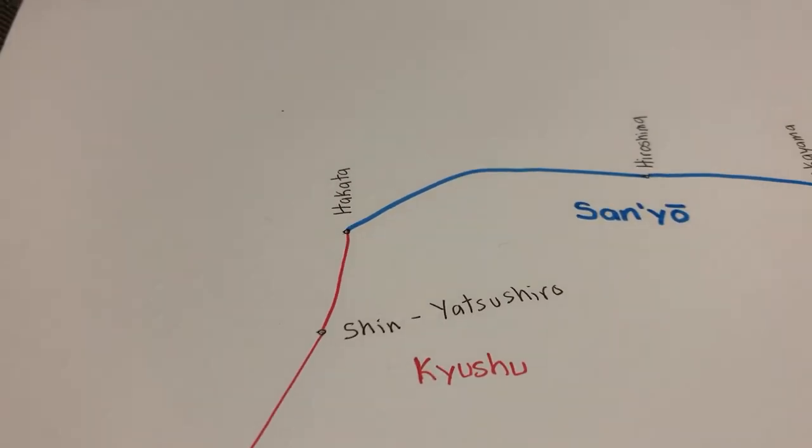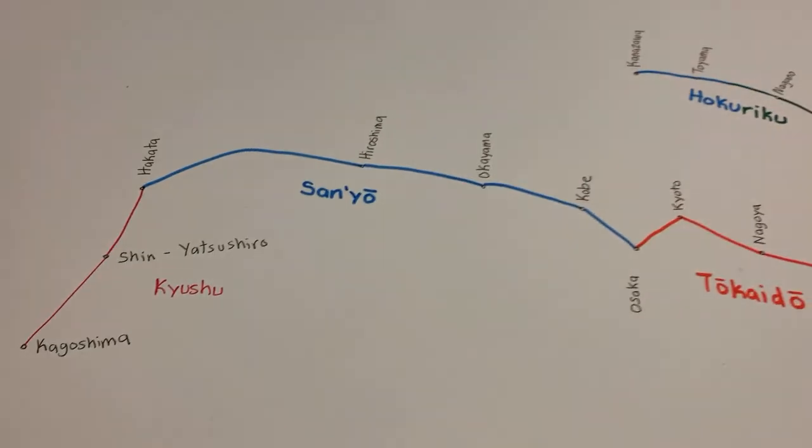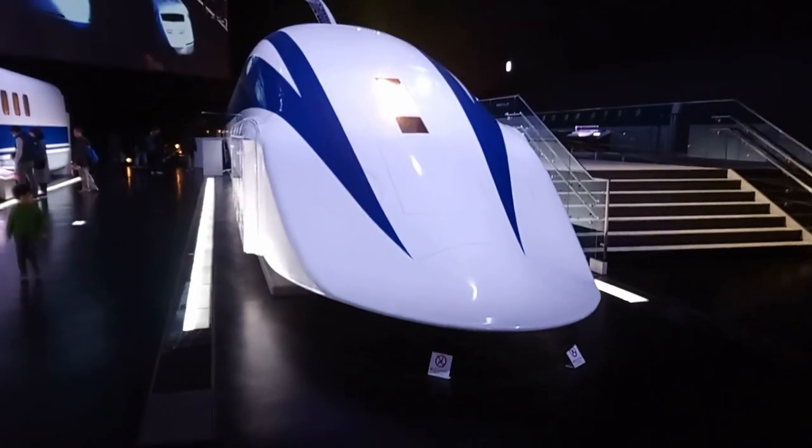One of the biggest projects right now is the Chuo Shinkansen, a maglev that will connect Tokyo with the city of Nagoya.